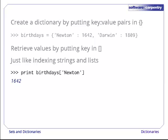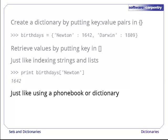For example, the expression birthdays of Newton returns the value 1642, since that's what we associated with the key Newton. It's just like using a phone book or a real dictionary. Instead of looking things up by integer index, we can look things up by name.